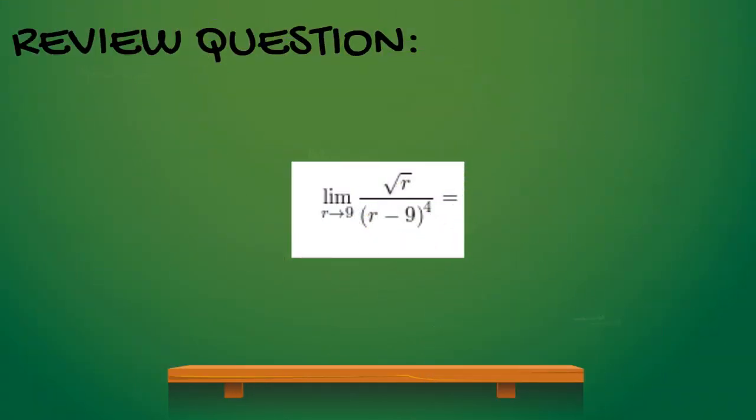This leads us to our review question, which is limit r approaching 9 of square root r over (r - 9) to the 4th power.